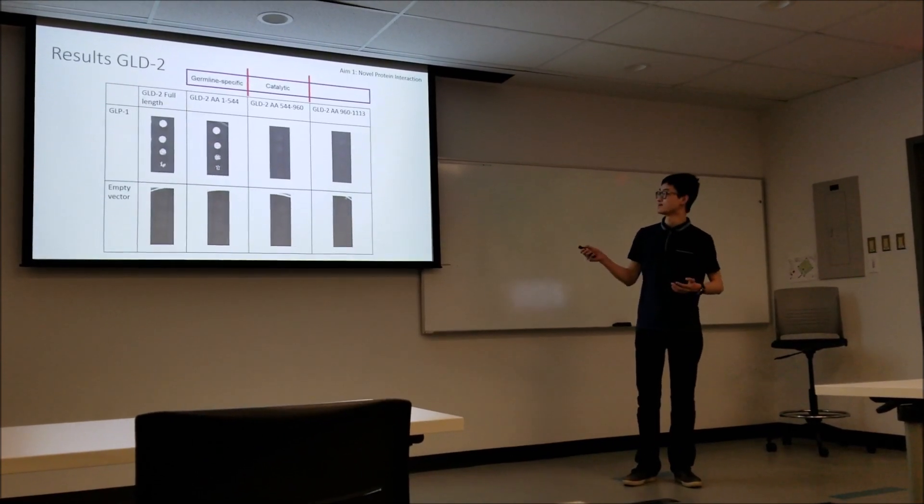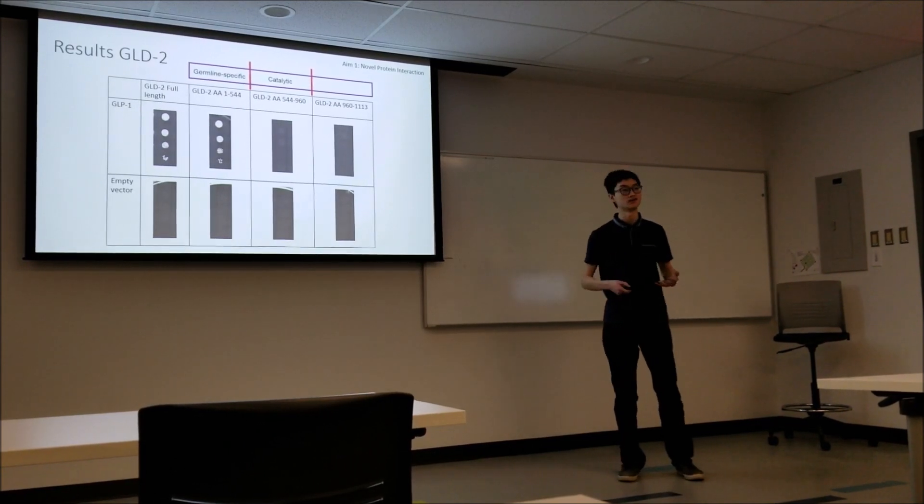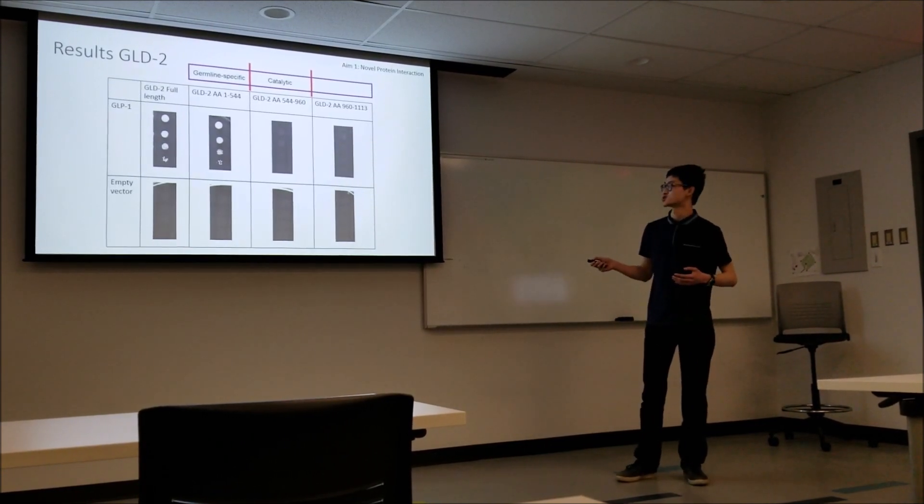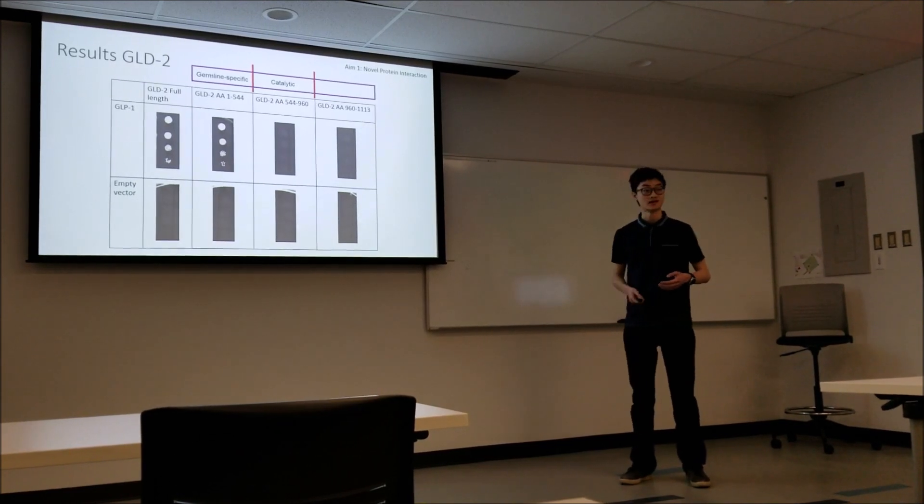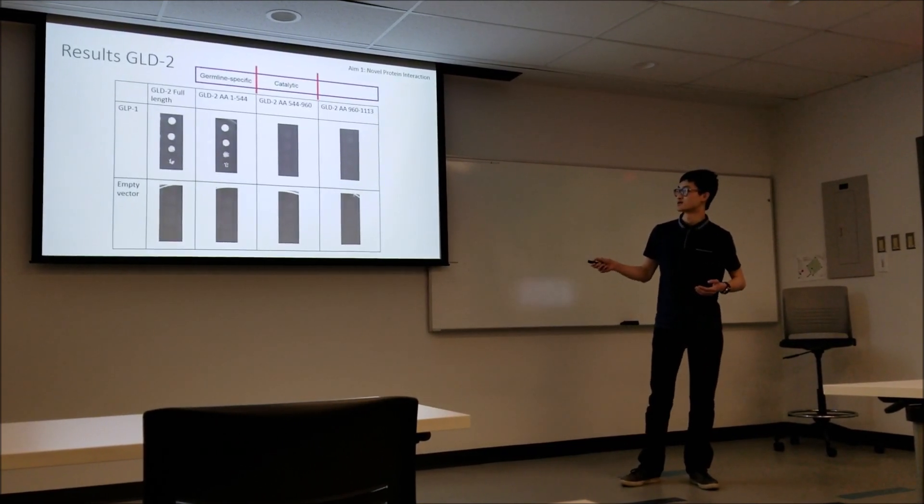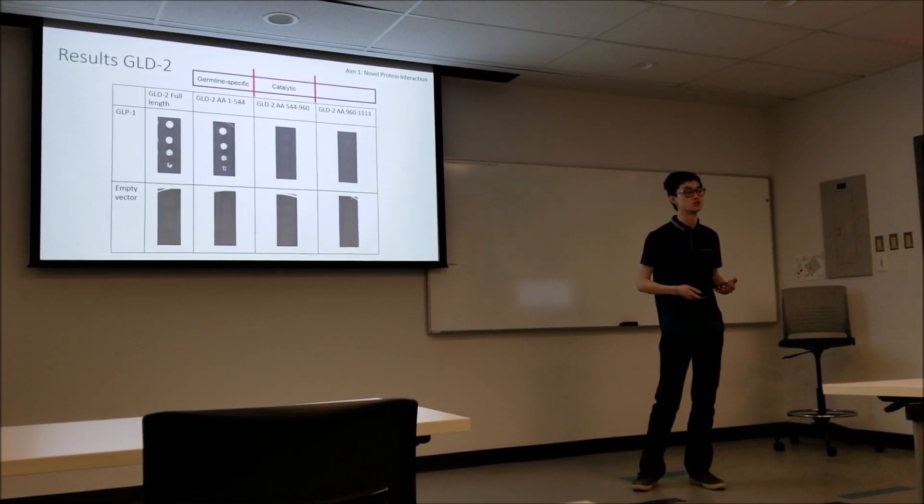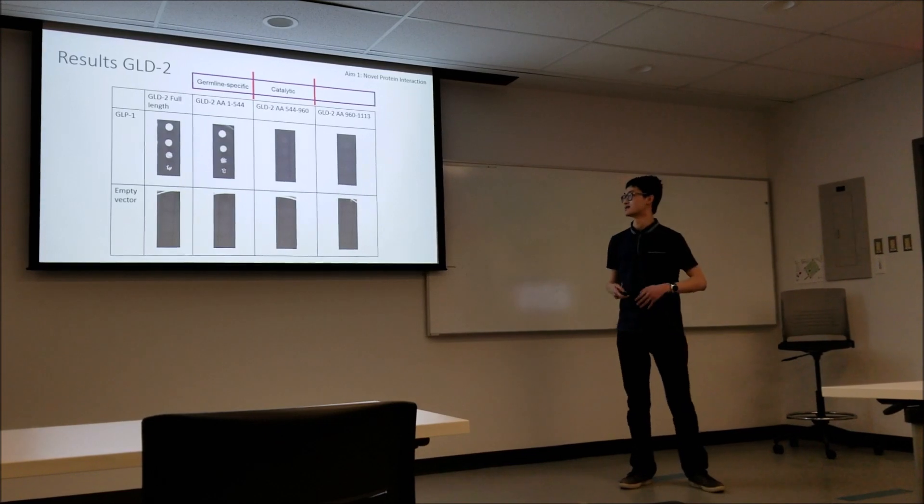Now let's move to GLD2, same thing. Here's our schematic. Starting with full-length, it looks like we have a nice clean interaction. These results are much better. Nice clean negative control in all the truncations, and it's very clear that we have this region that's interacting. That happens to be the germline-specific region of GLD2, and I'll tell you what that means later.